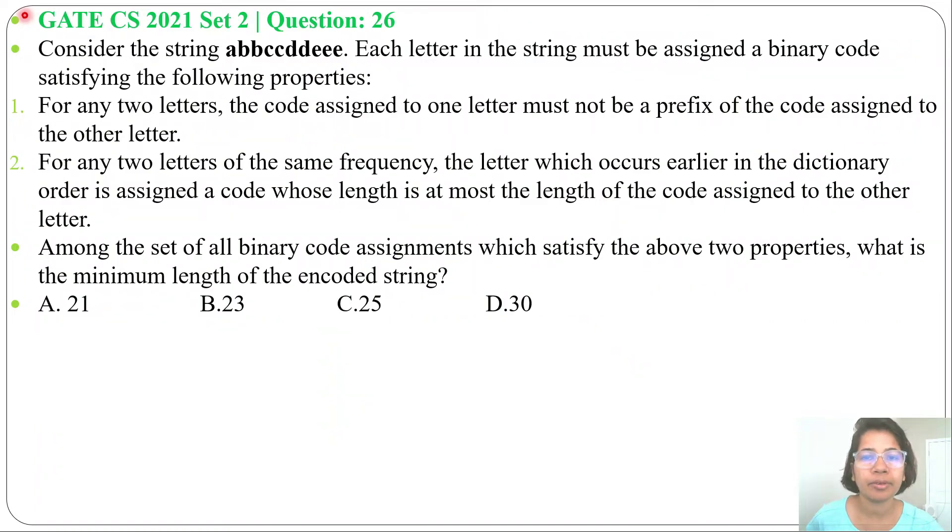Hi, let's hop on to a previous question on greedy technique. This question was asked in GATE CS 2021 Set 2, Question Number 26. Consider the string abbccdddeee. Each letter in the string must be assigned a binary code satisfying the following properties. First property: for any two letters, the code assigned to one letter must not be a prefix of the code assigned to the other letter.